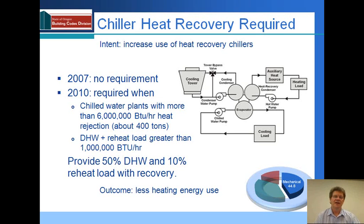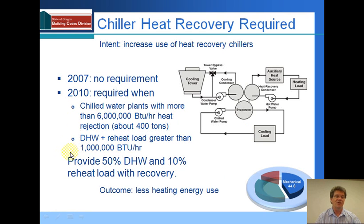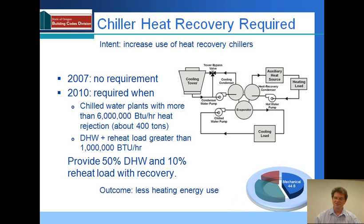Chiller heat recovery is now required — a new requirement on larger systems above 6 million BTUs per hour, which is a chilled water plant of about 400 tons, with a combined domestic hot water and reheat load greater than a million BTUs per hour. In this situation, half of the domestic hot water load and 10% of the reheat load must be met by recovered heat from the chiller. The outcome is that instead of throwing that heat away at the cooling tower, we recover it and reduce energy use at the boiler.